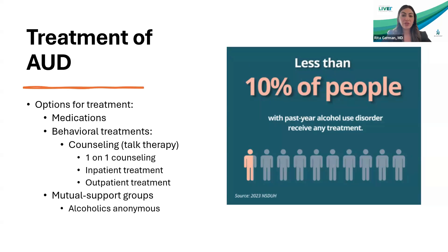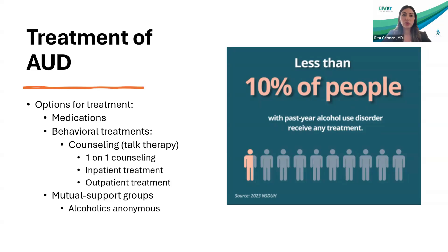There are lots of treatment options. There are medications that can help with alcohol cravings, reduce use, and lead to abstinence. There are also behavioral treatment options — things like counseling, one-on-one counseling, inpatient, or outpatient. It's not a one-size-fits-all, which is why there are lots of options. There are also mutual support groups like Alcoholics Anonymous, which are really useful tools. Patients may choose one or all of these options to undergo treatment for alcohol use disorder.